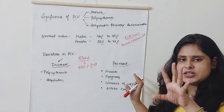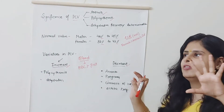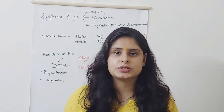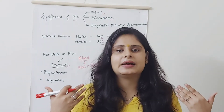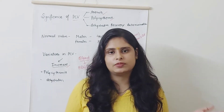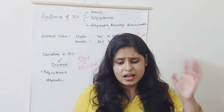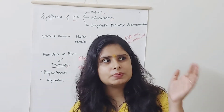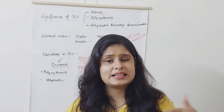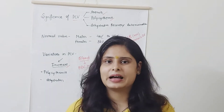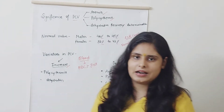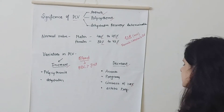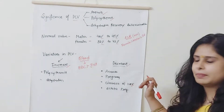If you have any problem in the liver, such as cirrhosis, the liver lobes are destructed and all hepatic cells are broken. When hepatic cells are broken, normal liver functions cannot be carried out. For this reason, PCV is reduced in cirrhosis of the liver.